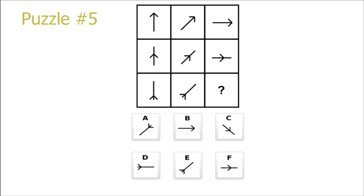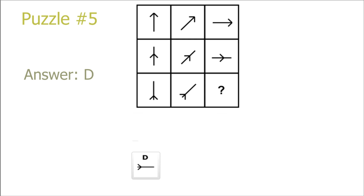Puzzle 5. This is the exact same as the previous one, just rotation on the columns and moving downwards on the rows. You can either rotate on the rows or pull it back on the columns, and we get the answer D.